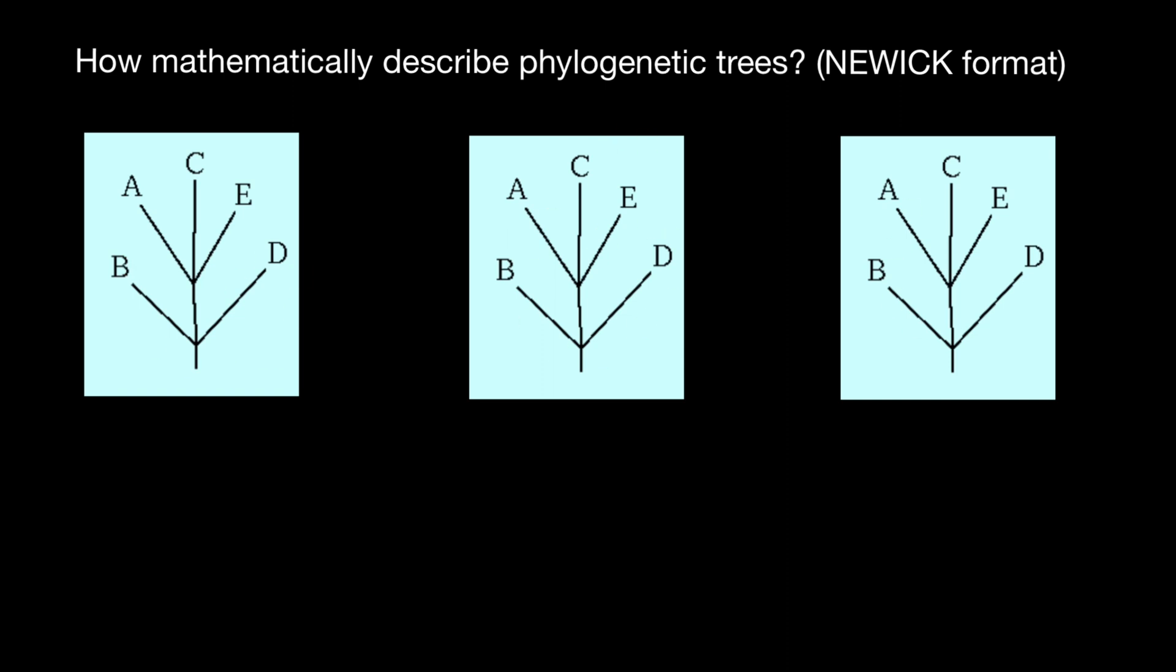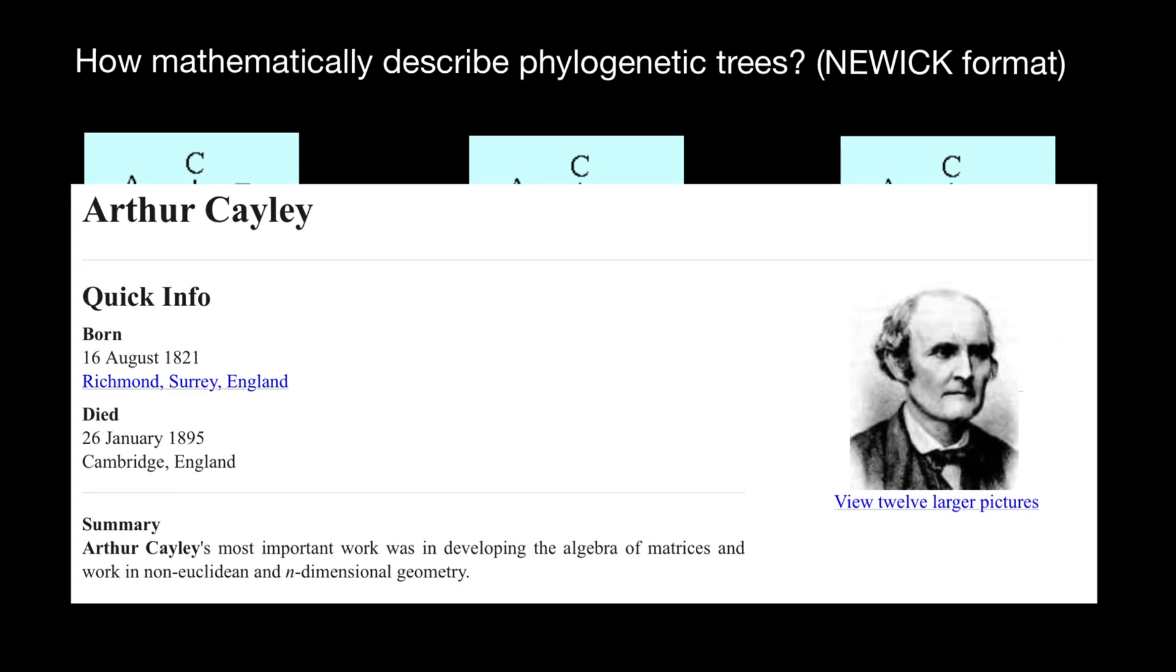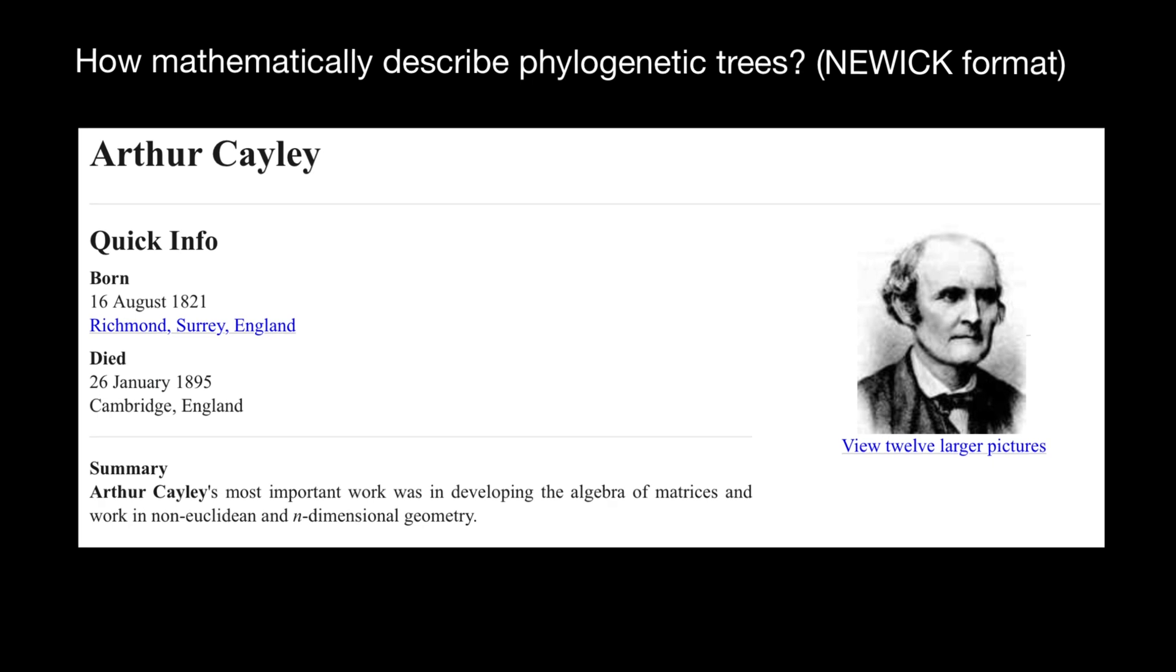But before that, I want to tell you the history of this method which we use in bioinformatics. It was developed by Arthur Cayley in the 19th century. He proposed to use commas and parentheses in order to describe phylogenetic trees.